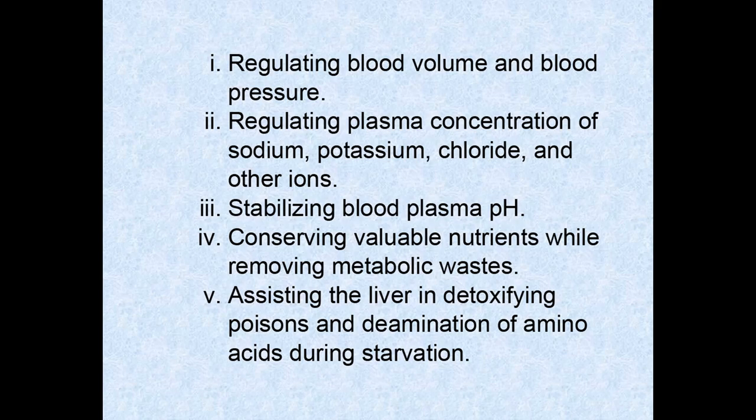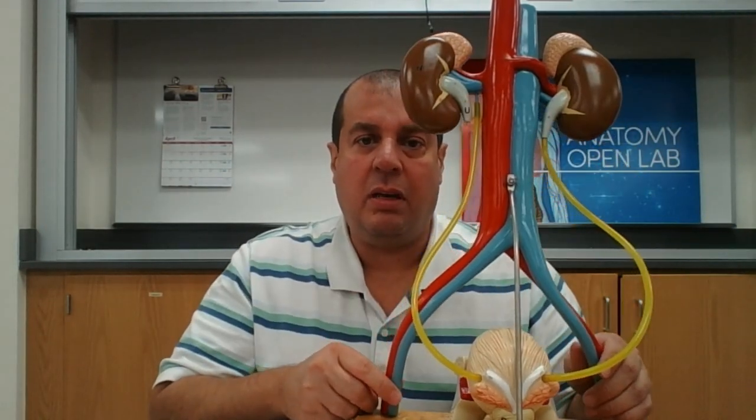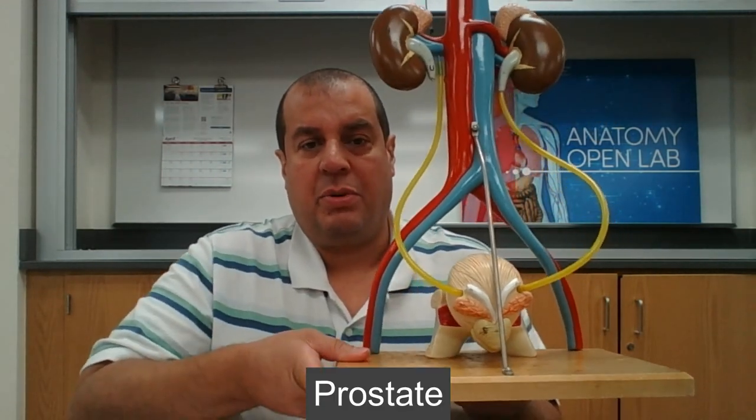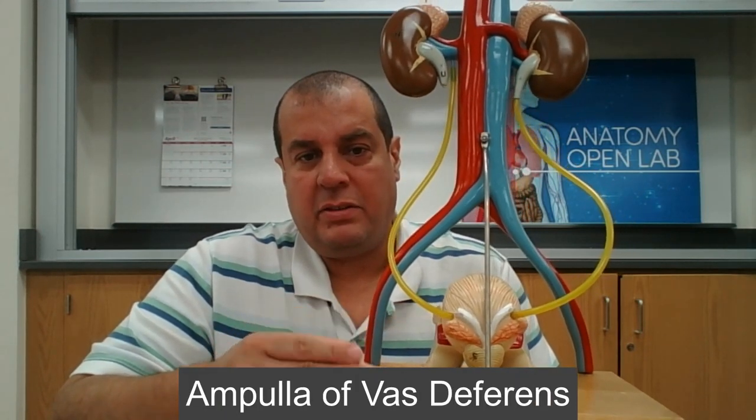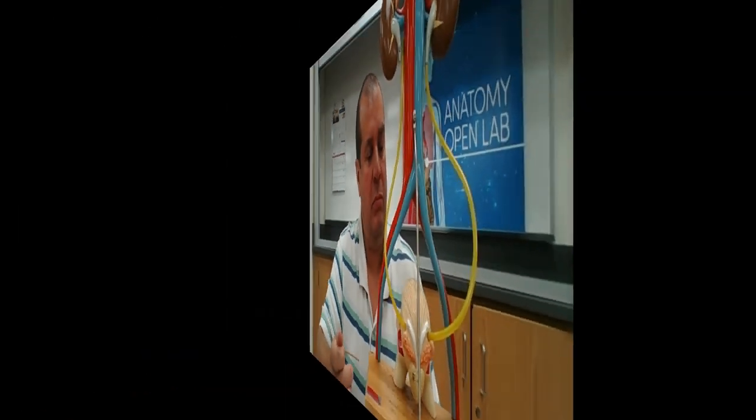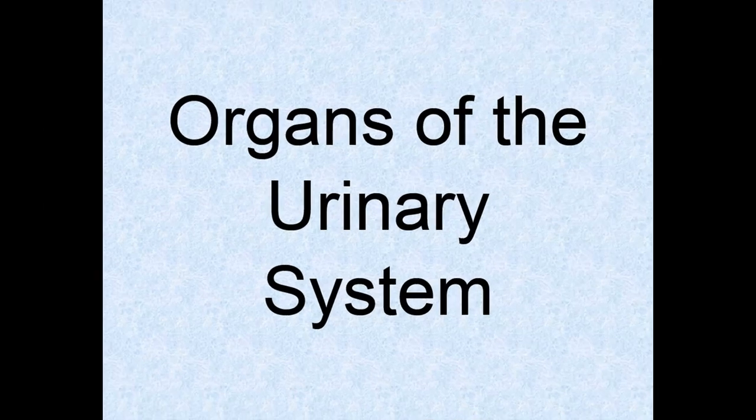Let's go ahead and start looking at the anatomical models — there are several models here I'll be showing you. The first model is a posterior view of the male. You can see at the bottom the prostate, seminal vesicles, and the ampullar vas deferens. This is the posterior view of the male organs of the urinary system.